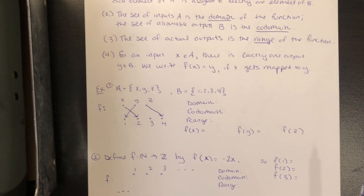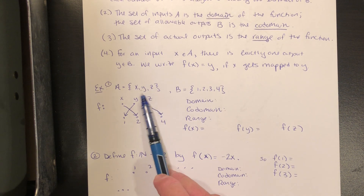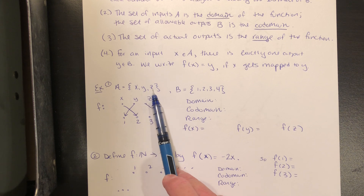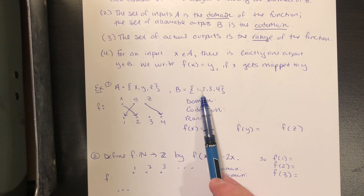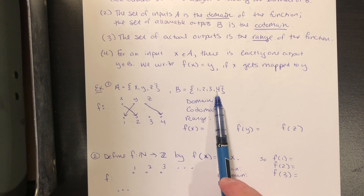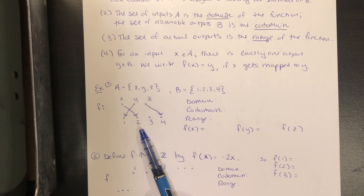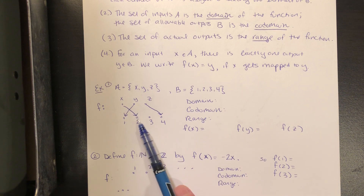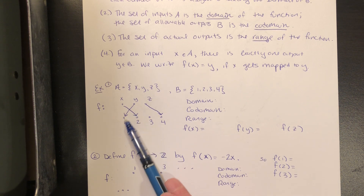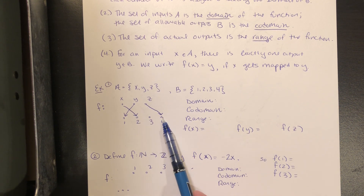In this first example, A — the domain — is the set containing X, Y, and Z. B — the co-domain — is the set containing 1, 2, 3, and 4. I'm going to draw a diagram to explain what the rule of this function is. The diagram tells me that X is mapping to 2, Y is mapping to 1, and Z is mapping to 4.